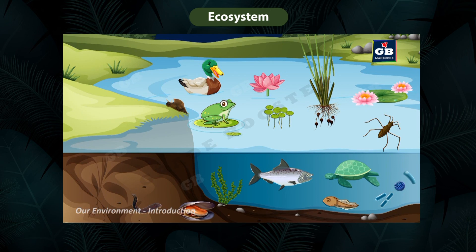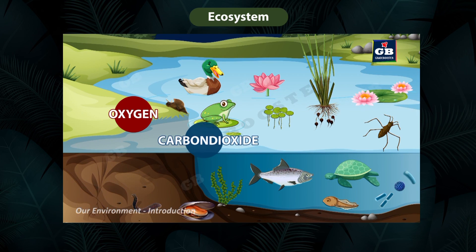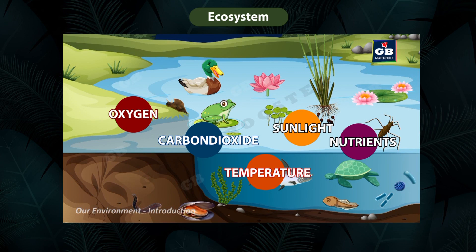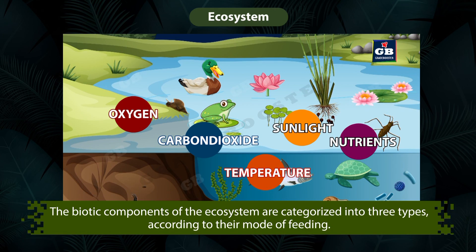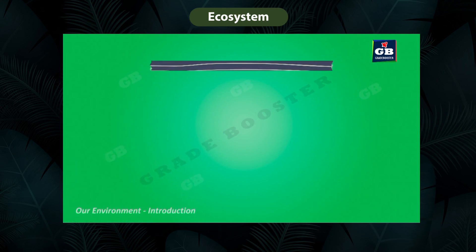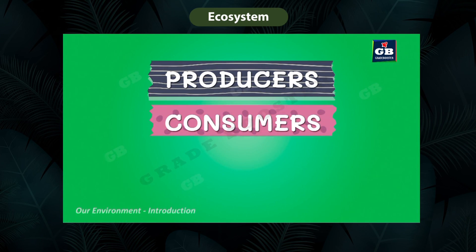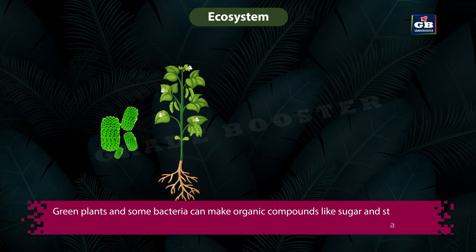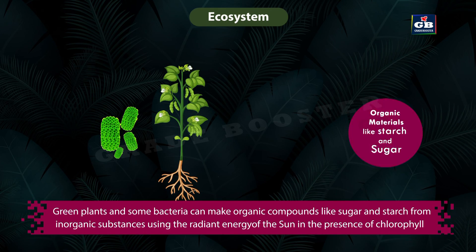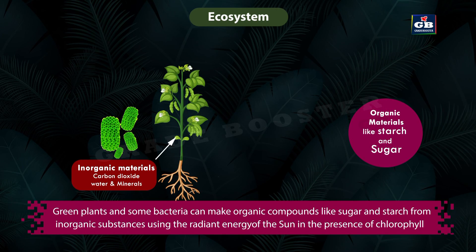Oxygen, carbon dioxide, temperature, sunlight, and nutrients are the abiotic components of the pond ecosystem. The biotic components of the ecosystem are categorized into three types according to their mode of feeding: they are producers, consumers, and decomposers.